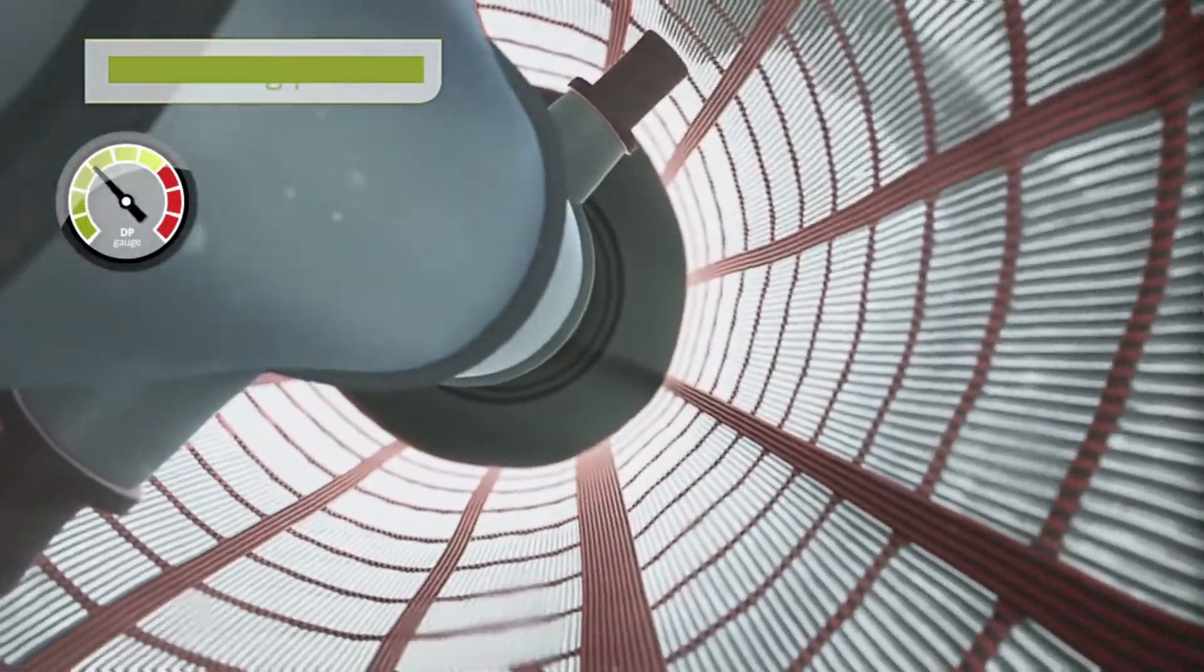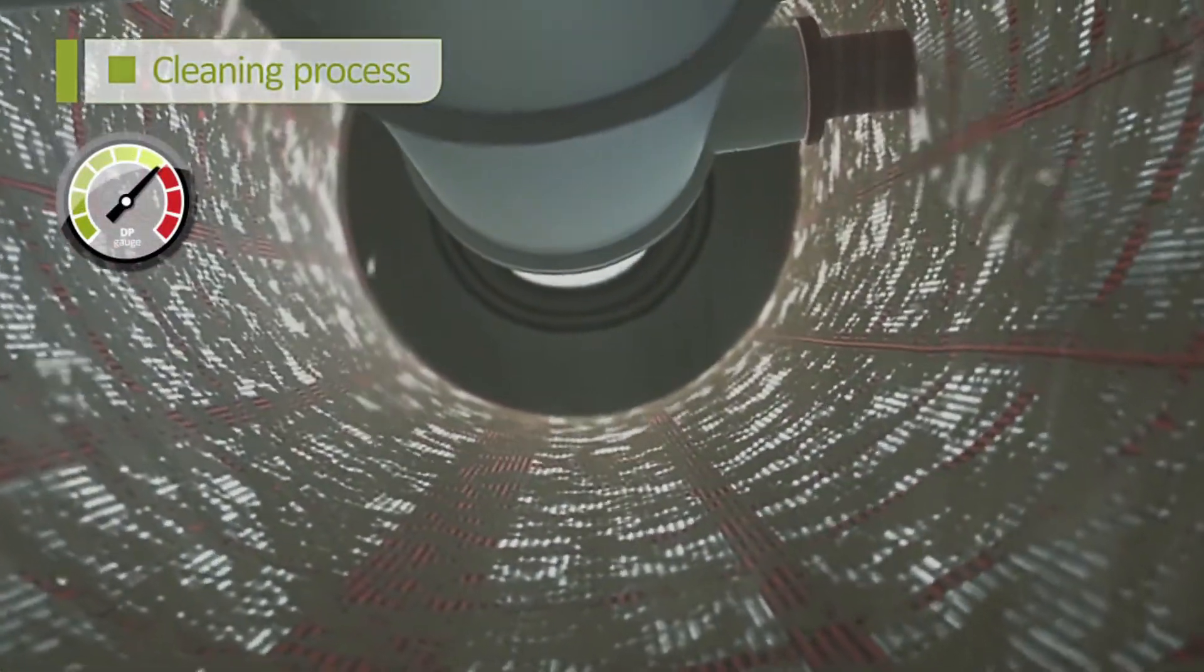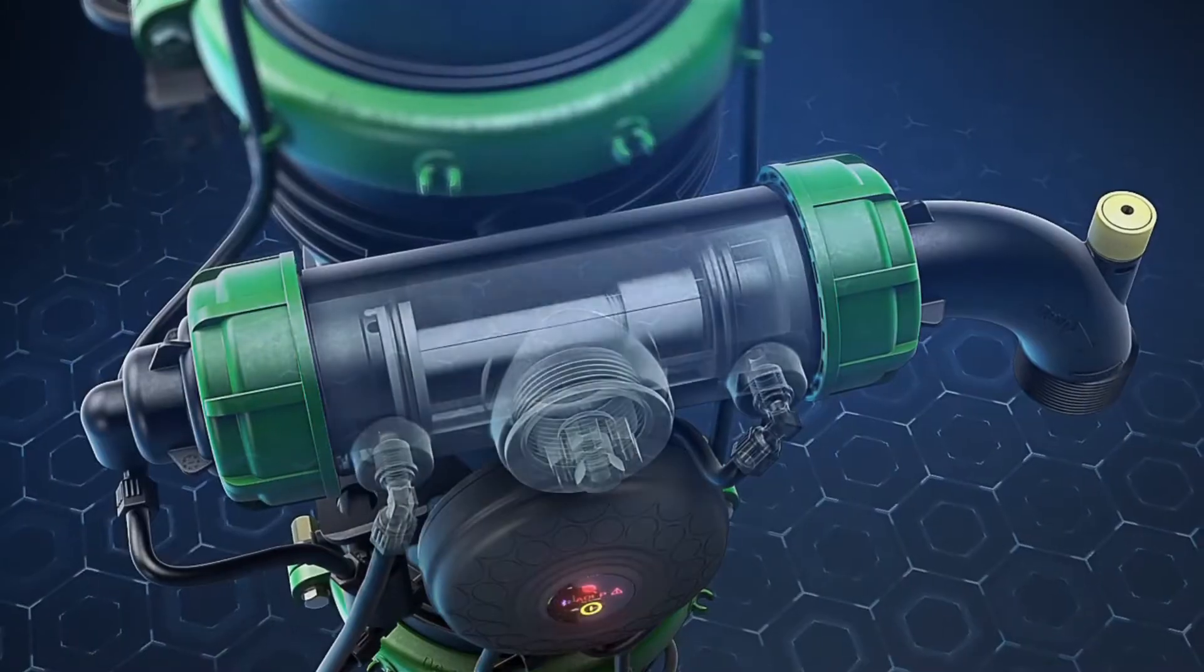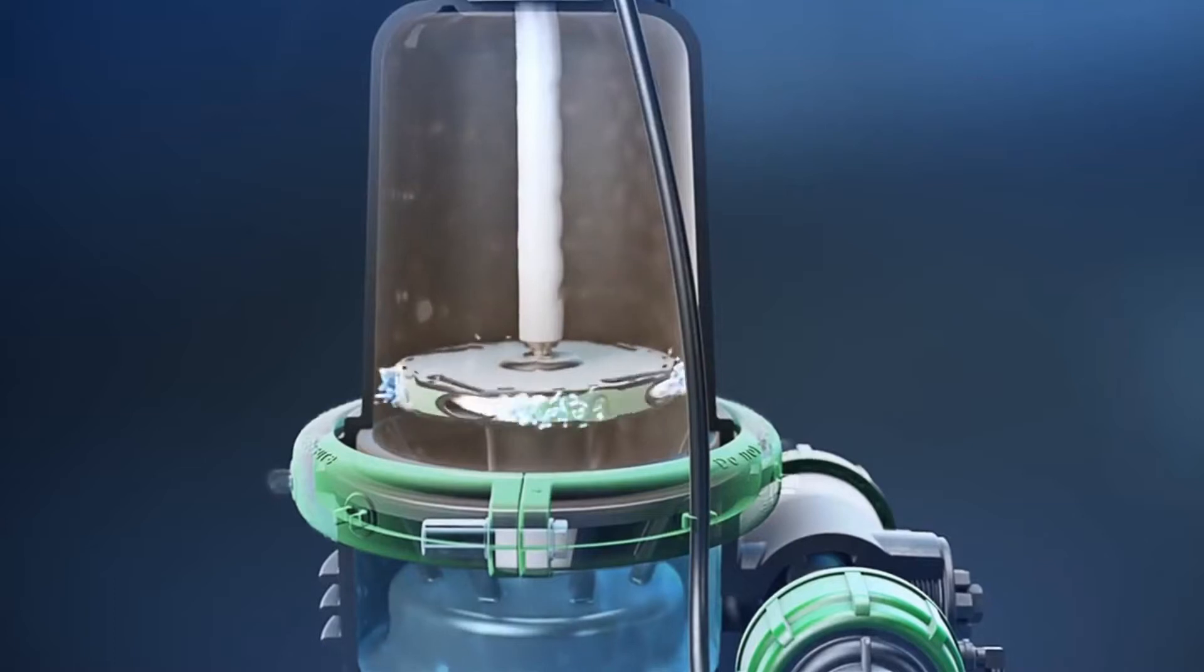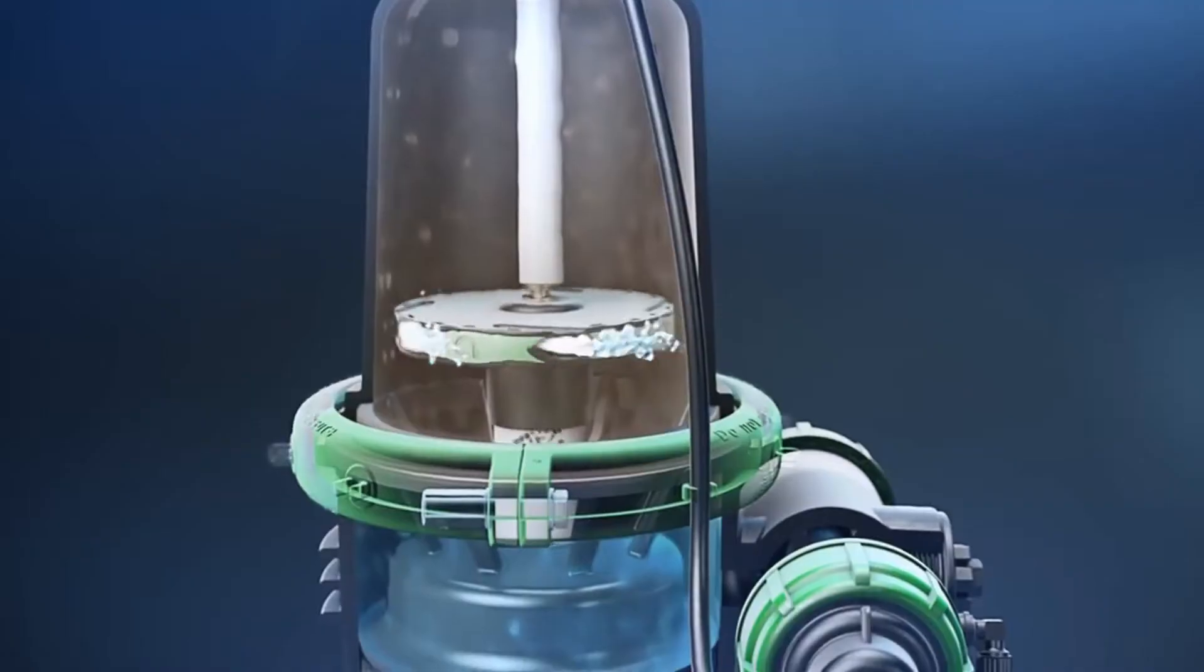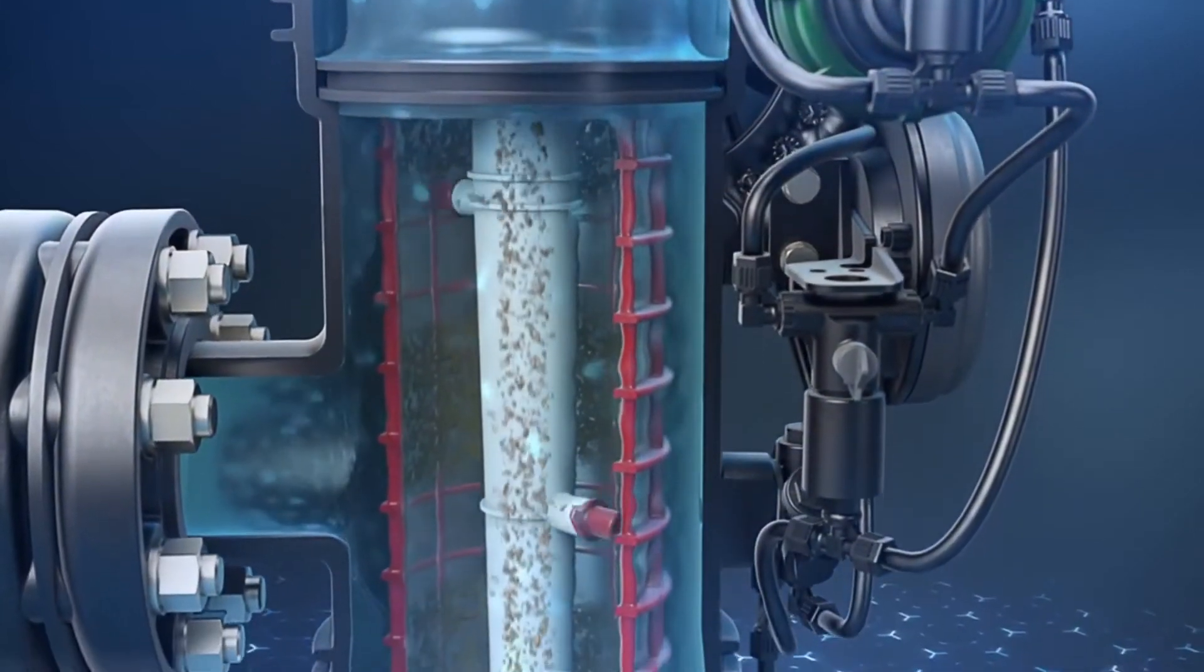The cleaning process begins when the pressure differential reaches a preset level and the system activates its self-cleaning cycle by opening the flushing valve. A strong suction force at the scanner nozzles effectively removes the dirt particles from the screens.